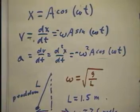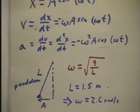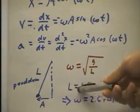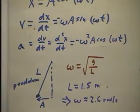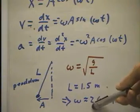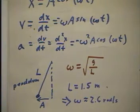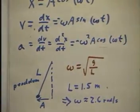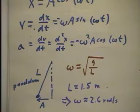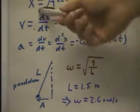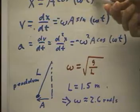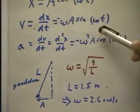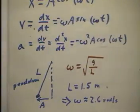For a pendulum, omega is the square root of g over L. So for the pendulum that we observed in class with a length of 1.5 meters, we obtained omega at about 2.6 radians per second. So our pendulum should obey this kind of a law or equation. Our position ought to be given by this sort of an equation, velocity by this, and so forth.